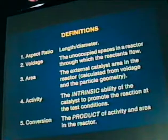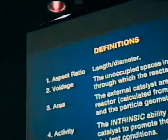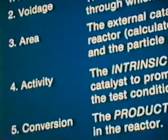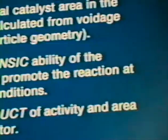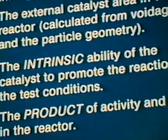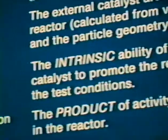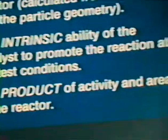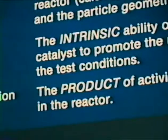On the basis of that test work and data reduction, adding a couple more definitions: The activity of the catalyst I like to view as the intrinsic ability of the catalyst to promote the reaction at the test conditions. And conversion is the product of that intrinsic catalyst activity with the area in the reactor. It's important to keep these things in mind so that when you're testing catalysts, you clearly differentiate between the catalyst's activity and the conversion.